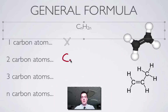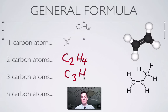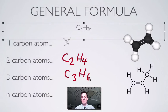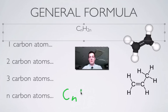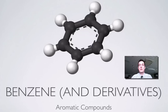If you've got two carbon atoms, it's C₂ and 2×2 = 4, so C₂H₄. This is a picture of that molecule — two carbon atoms, four hydrogen atoms — it's called ethene. With three carbon atoms, C₃ and 2×3 = 6, and there's a molecule with three carbon atoms, a double bond because it's an alkene, and six hydrogens. Notice that every carbon has made four bonds. So once again, if you've got a whole number of carbons, the number of hydrogens is given by twice that number.